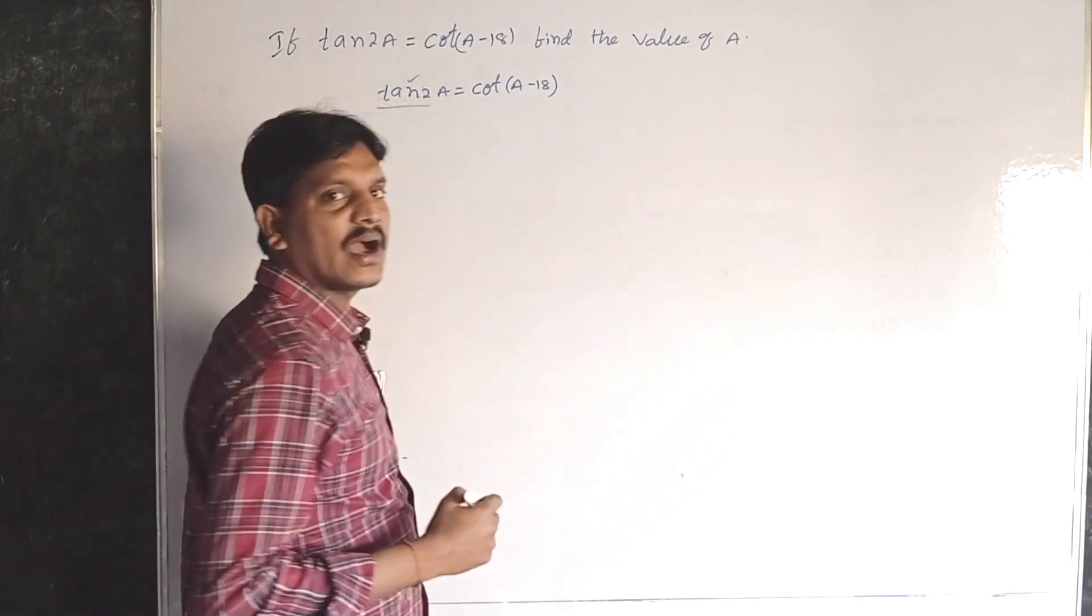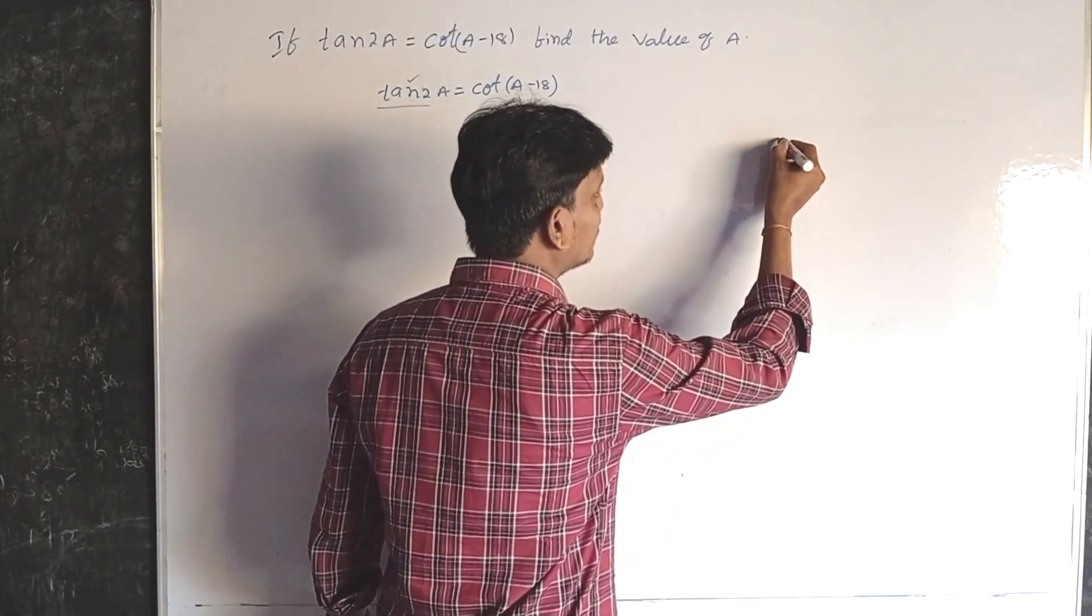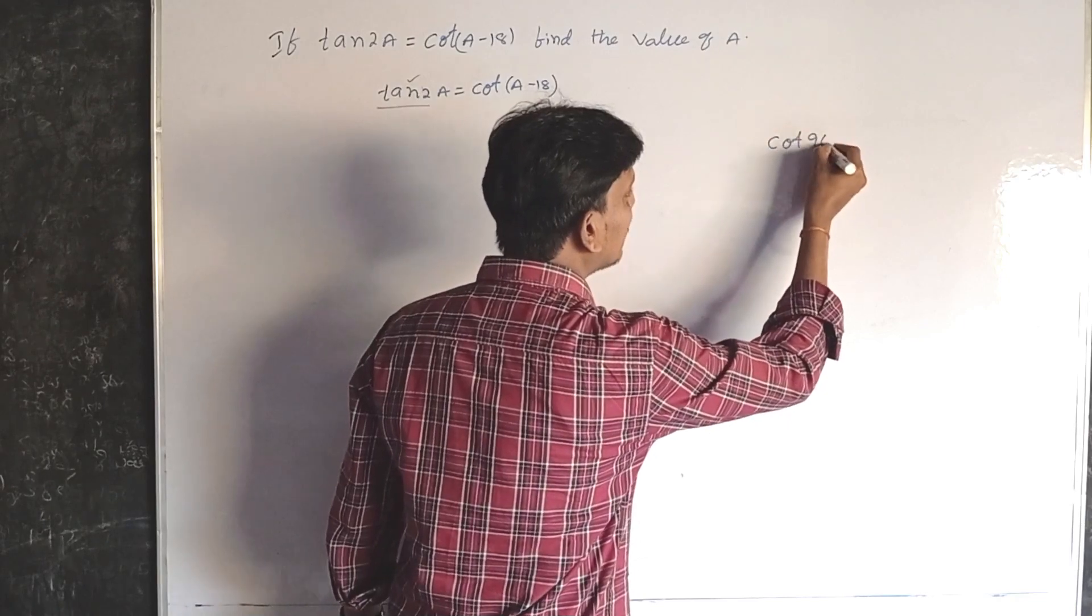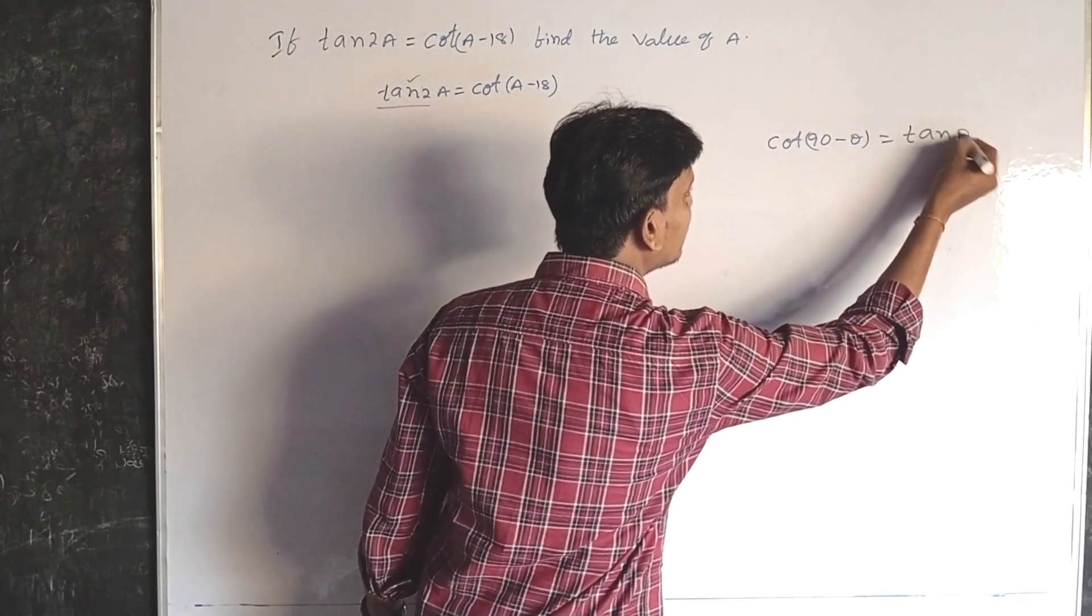We have a formula from complementary ratios. What is it? Cot(90 minus theta) is equal to tan theta.